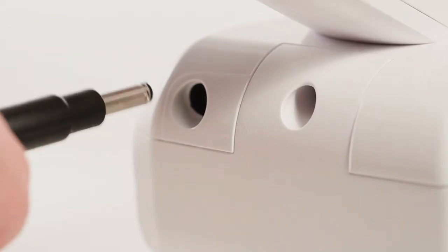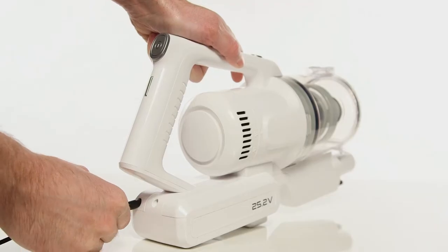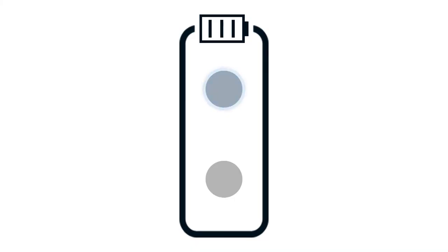The charging port can be found on the vacuum handle. Whilst charging your vacuum will show one flashing light. Both lights will turn off when fully charged. One of the lights will flash when the battery is low during use.